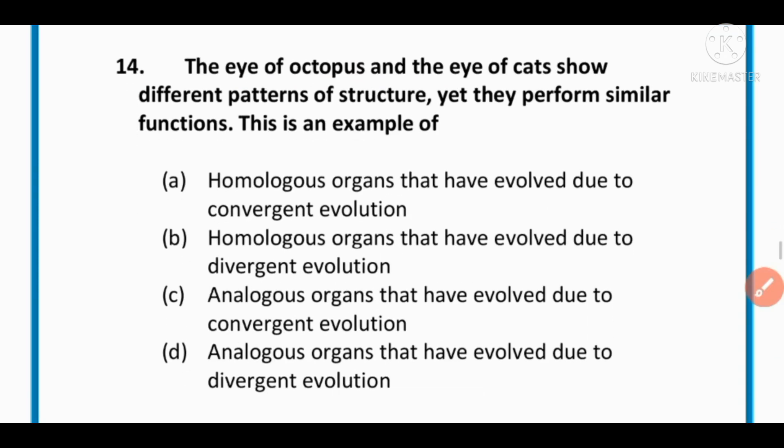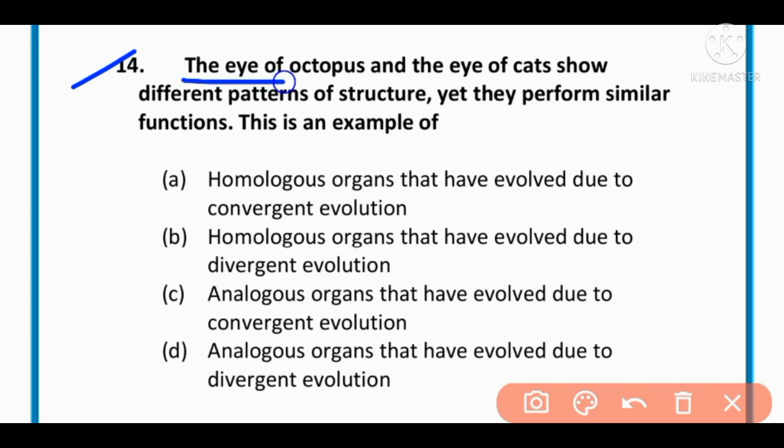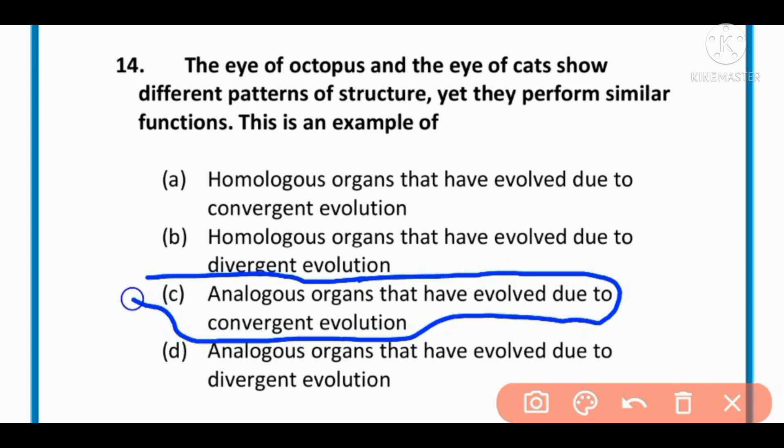MCQ number 14: The eye of octopus and the eye of cat show different patterns of structure, yet they perform similar functions. This is an example of homologous organs that have evolved due to convergent evolution, homologous organs due to divergent evolution, or analogous organs that have evolved due to convergent evolution. The correct option is C: analogous organs that have evolved due to convergent evolution.